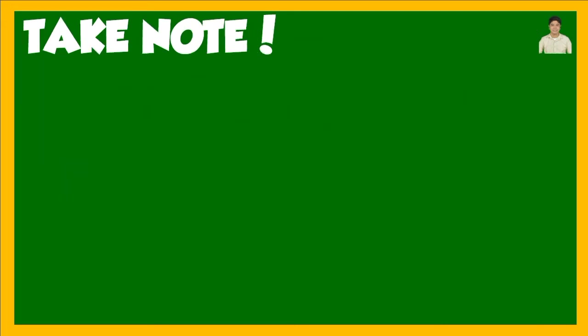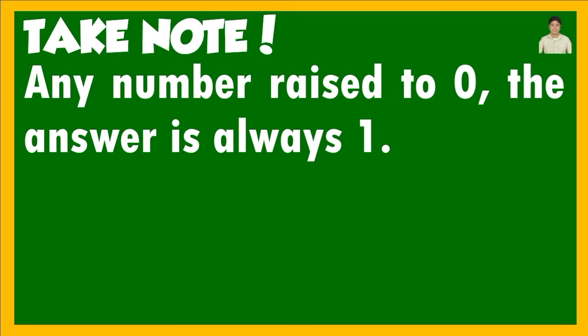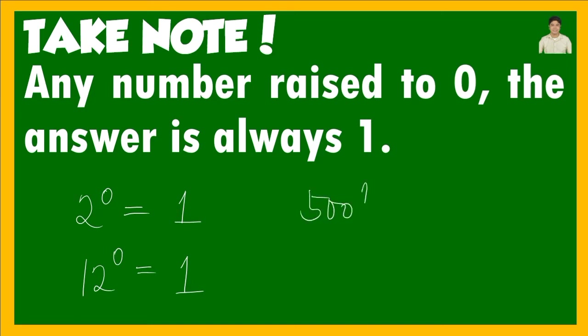Take note: any number raised to 0, the answer is always 1. No matter what the number is, if its exponent or power is 0, the answer is always 1. For example: 2 raised to 0 is 1; 12 raised to 0 is equal to 1; 500 raised to 0 is 1. Any number raised to 0 — the answer is always 1.